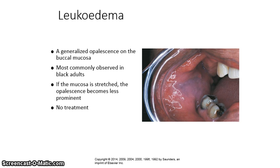Leukoedema is a generalized opalescence on the buccal mucosa. It is most commonly observed in black adults but can also be seen in Asians. If the mucosa is stretched, the opalescence becomes less prominent. No treatment is necessary.